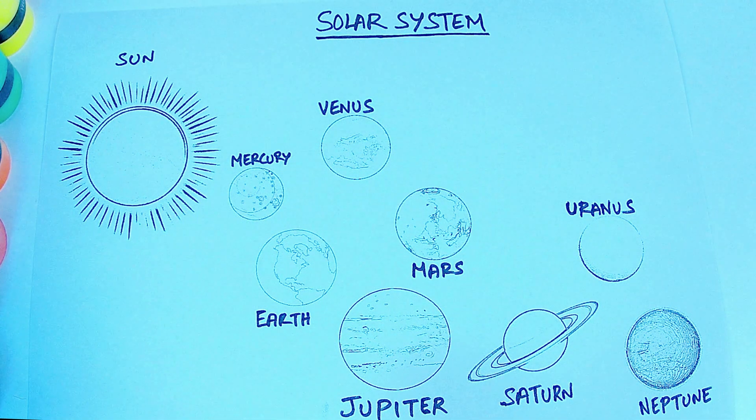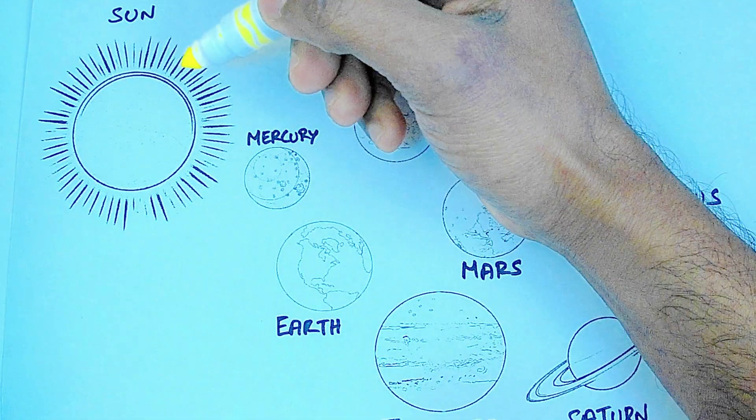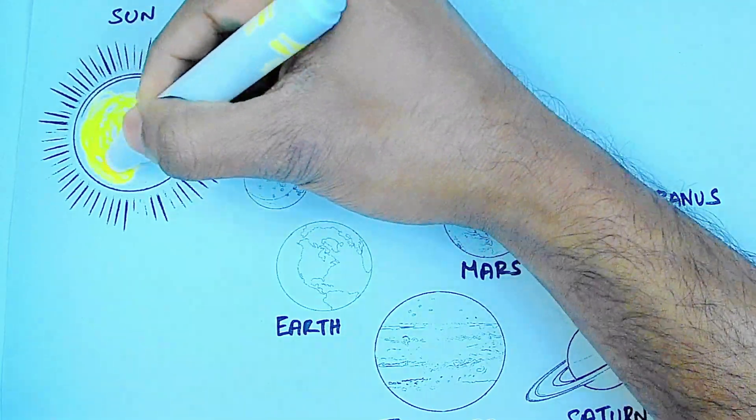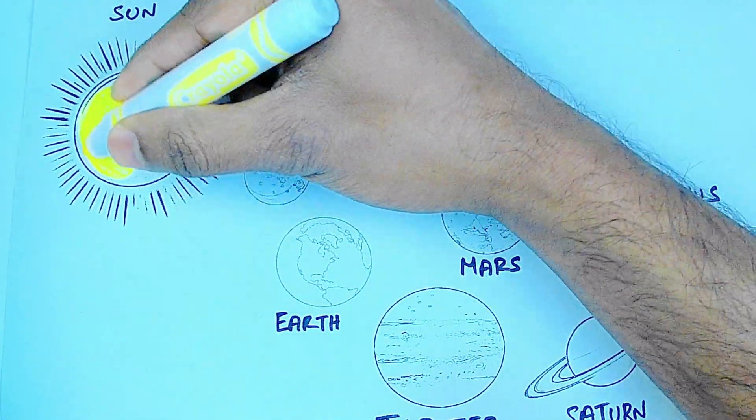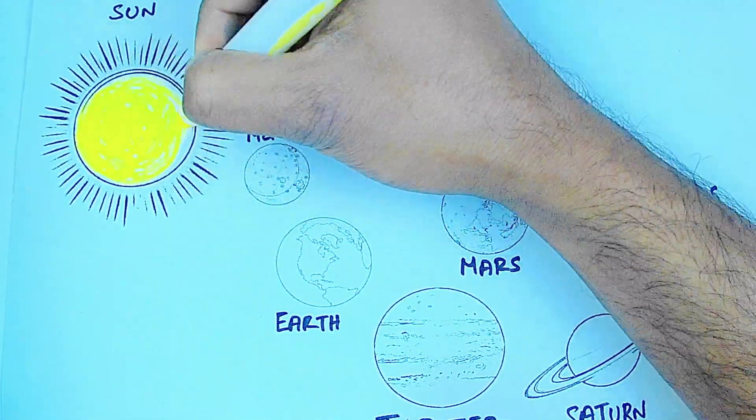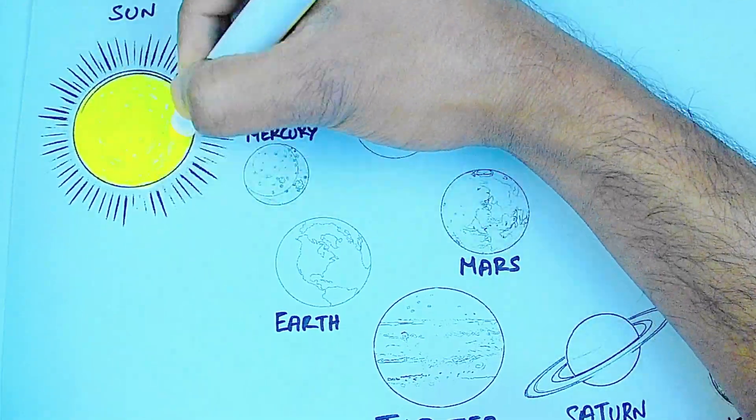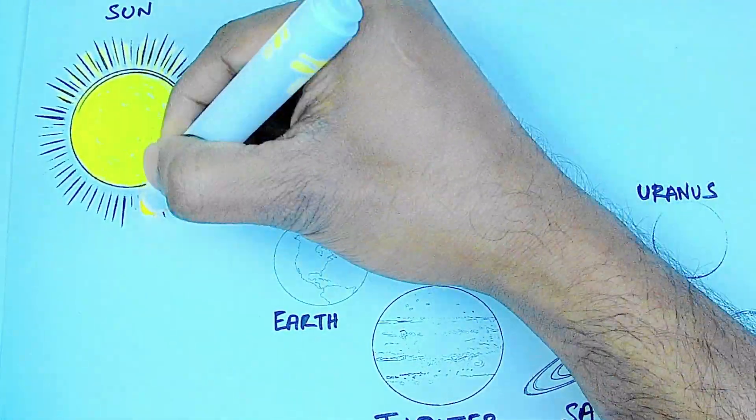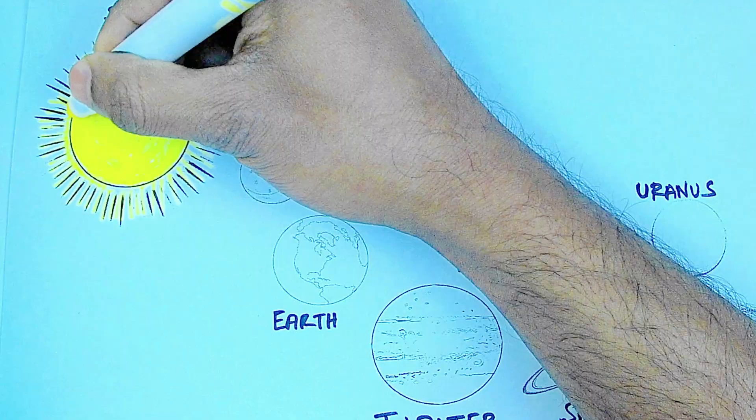Hey kids, in this video let's learn about the solar system. Let's color the Sun. Sun is a star. All the planets orbit around it. Sun provides the Earth with warmth.